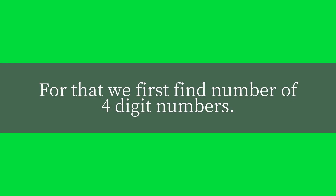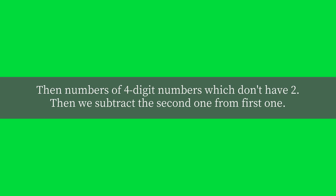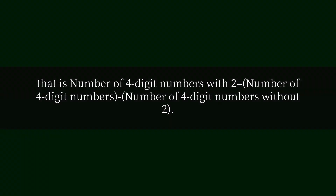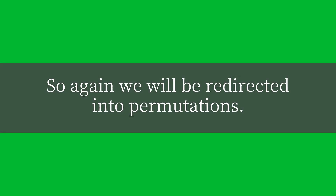For that, we first find the number of four-digit numbers, then the number of four-digit numbers which don't have 2. Then we subtract the second one from the first one. That is: number of four-digit numbers with 2 equals number of four-digit numbers minus number of four-digit numbers without 2. So again, we will be redirected into permutations.